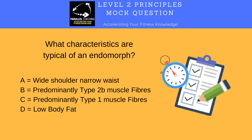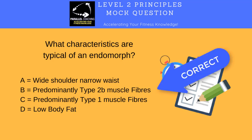The answer is B — predominantly type 2b muscle fibers. The endomorph was the shorter, more rounded somatotype, and they have more type 2b muscle fibers because these are the ones that grow in size considerably and are very good at strength and power work. Wide shoulders and narrow waist would be a mesomorph, predominantly type 1 muscle fibers would be an ectomorph, and low body fat would be an ectomorph, or potentially a mesomorph.